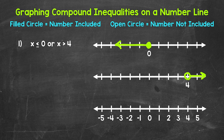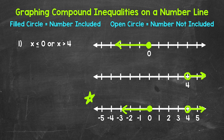Now since this is a compound inequality, we need to combine these — we're going to graph them on the same number line. We have x is less than or equal to 0, so we need that filled circle at 0 with the arrow going left. And then we have x is greater than 4, so we need that open circle with the arrow going right. This is our graph of the compound inequality, representing x is less than or equal to 0, or x is greater than 4.